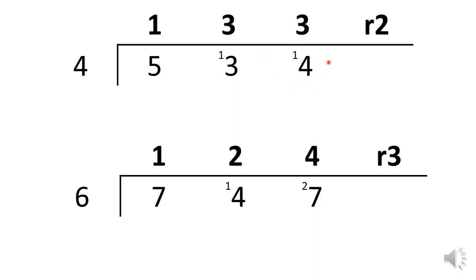I have 14 ones. How many groups of four can I make out of 14 ones? I can make three complete groups and I have two left over — remainder two. So 534 divided by four is 133, remainder two.